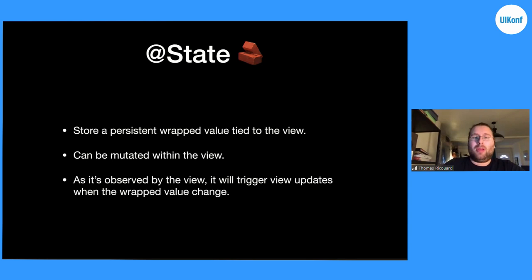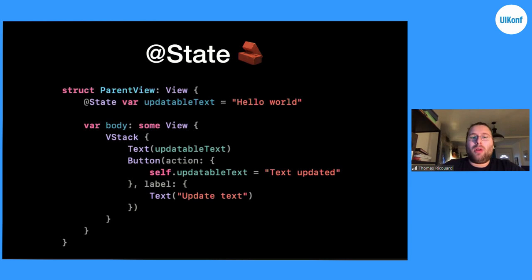Let's see a concrete example. We have our parent view with a property, the text wrapped into a State property wrapper with the value "hello world". In the body, we have a VStack with a text displaying the text property and a button. Whenever we click the button, it will update the text to a new value, "text updated". Because we update this property, the text view will update and reflect the latest change. We can mutate it because we use State — we couldn't if we were not using the State property wrapper.